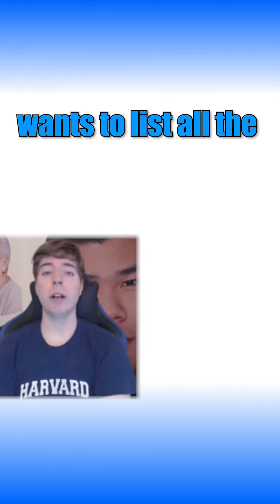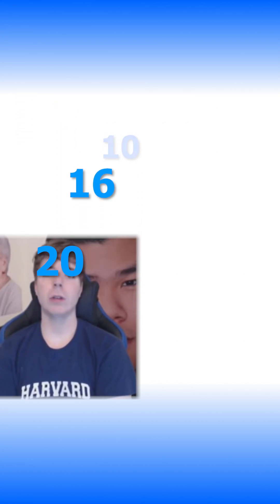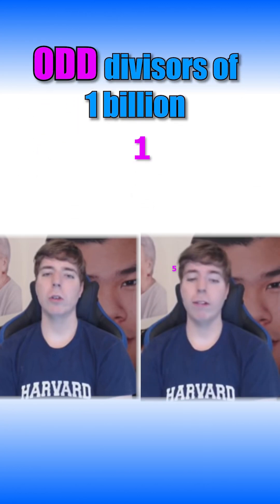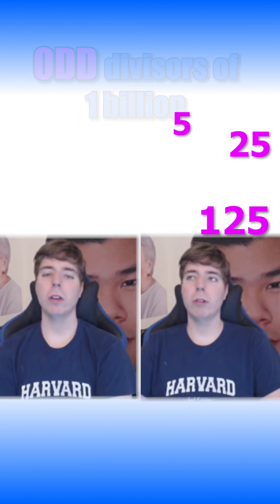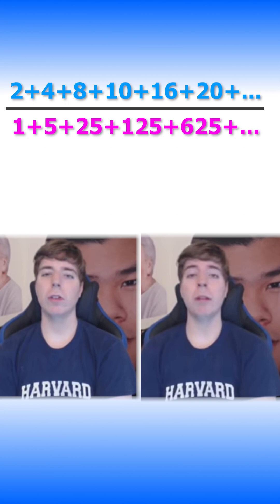Young Jimmy here wants to list all the even divisors of 1 billion. Then he's going to list all the odd divisors of a billion. If you were to take the sum of all the even divisors and divide it by the sum of all the odd divisors, what would you get?